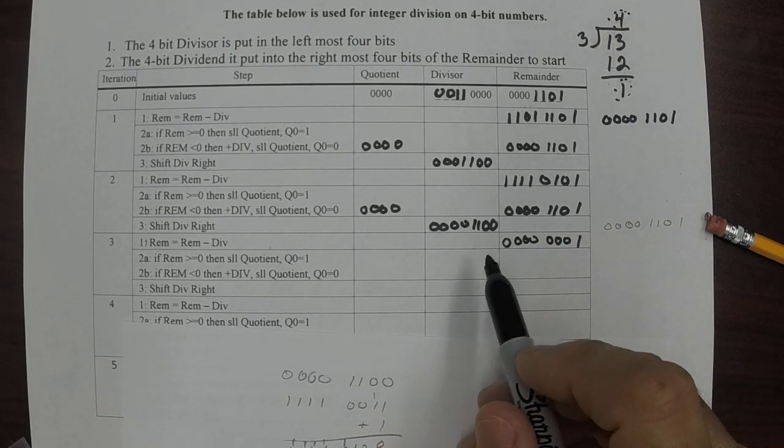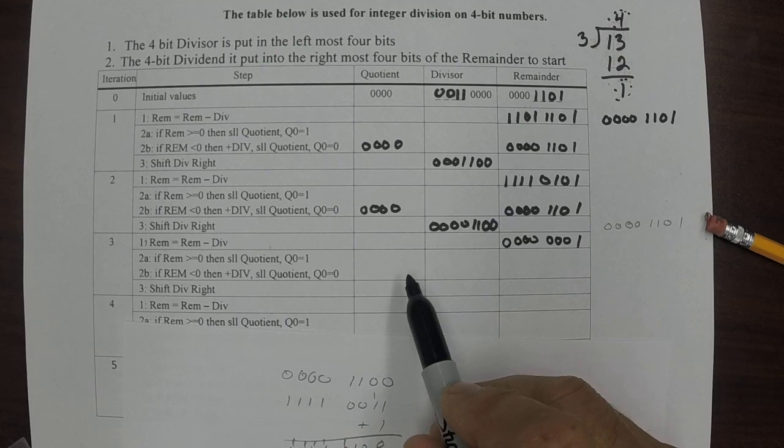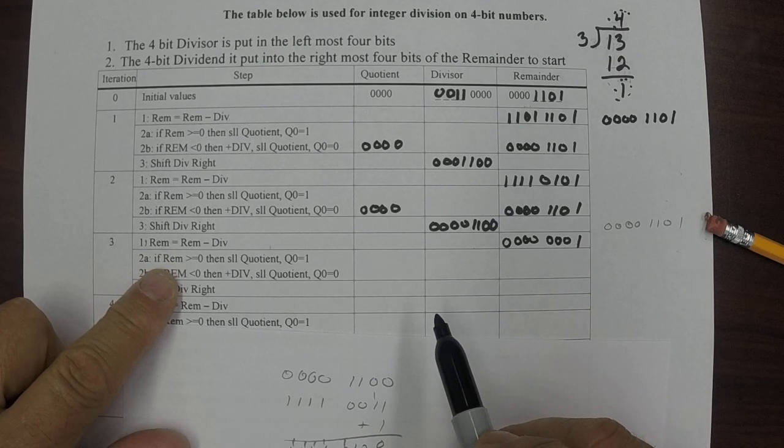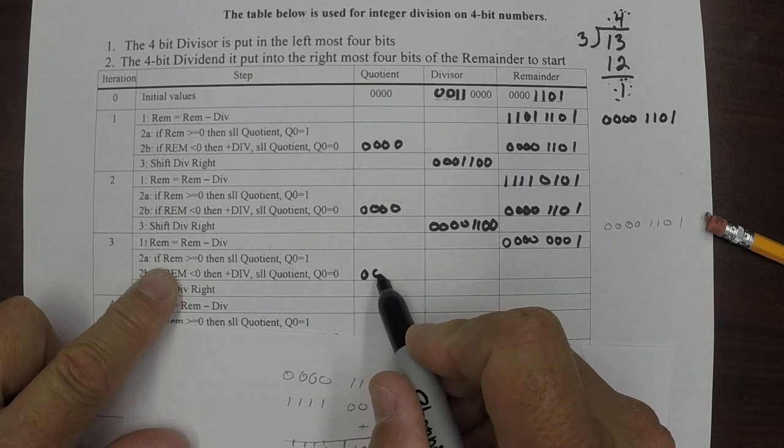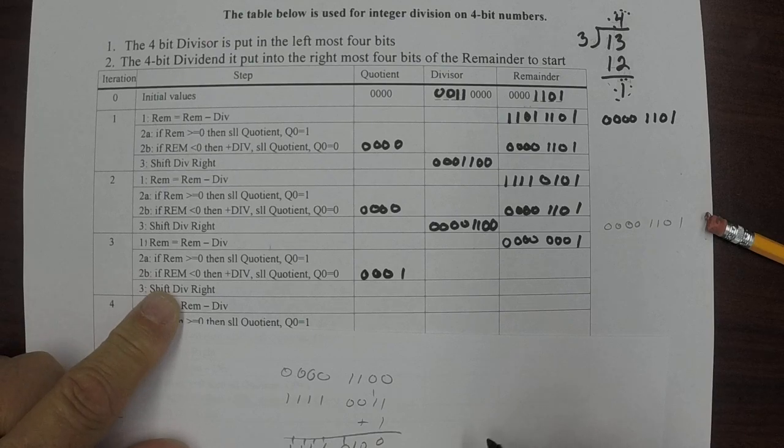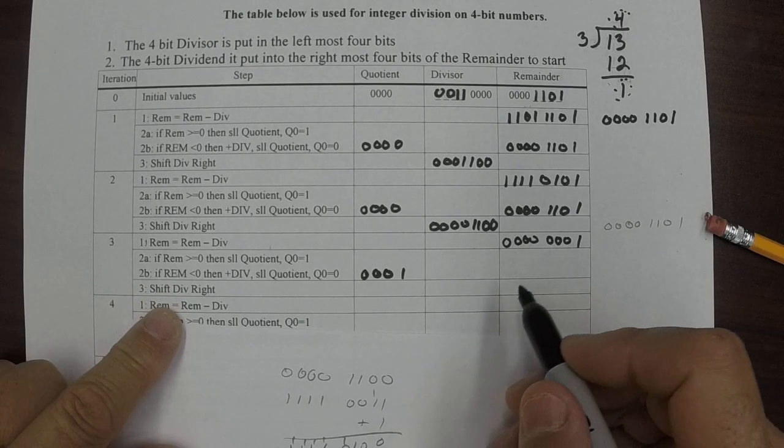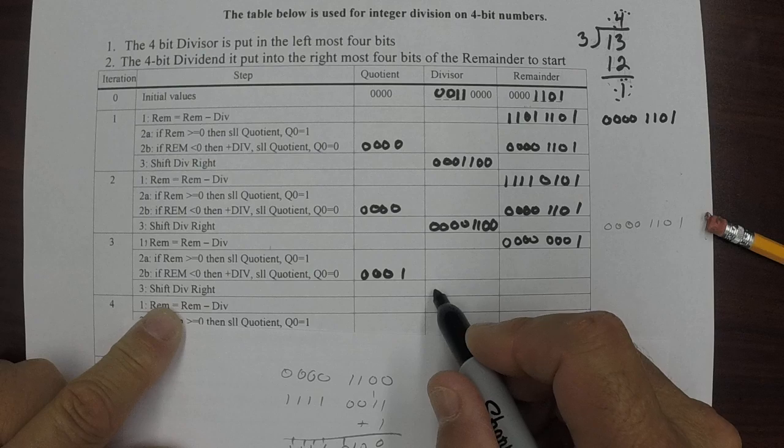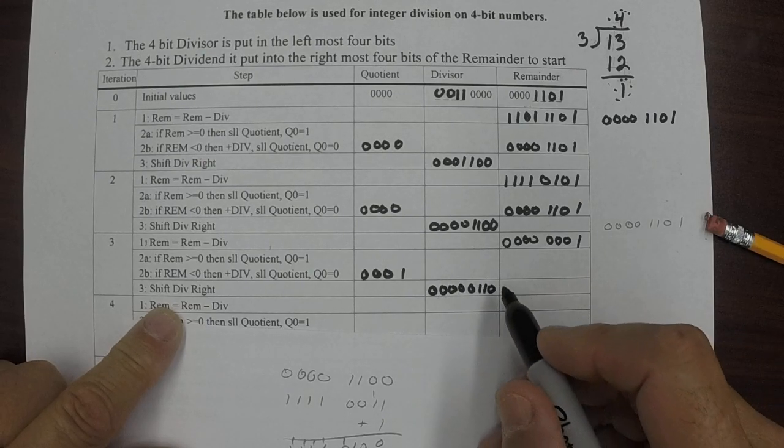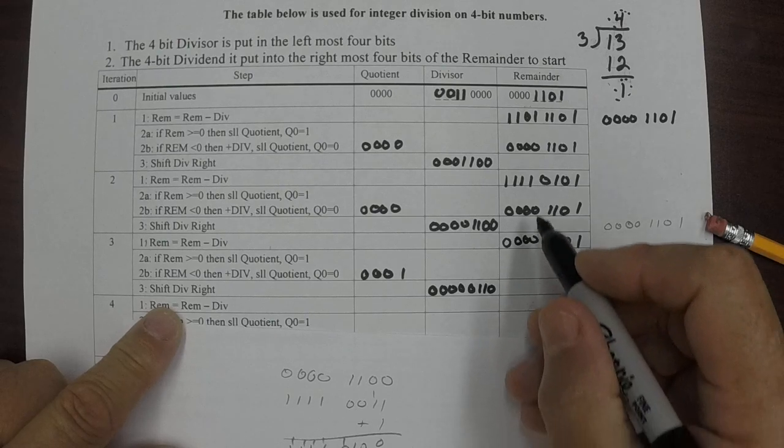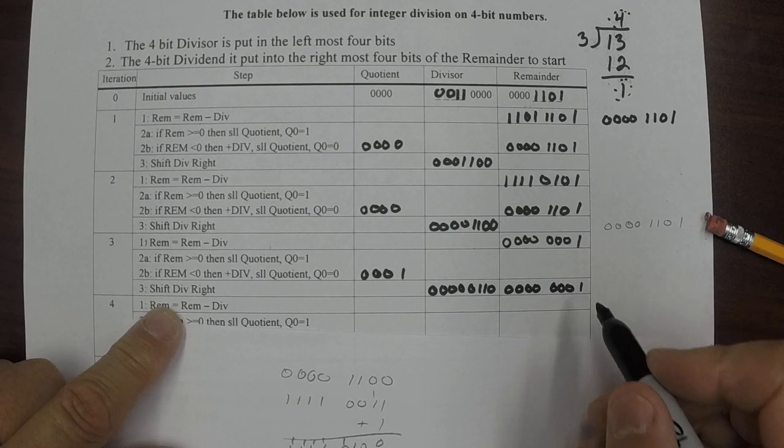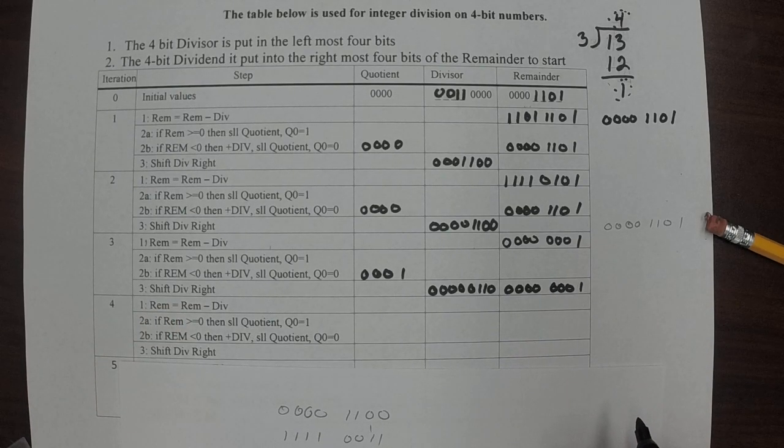Now, if the remainder is greater than or equal to zero, it is. Then I shift the quotient left and put a one right there. Then I shift the divisor right: zero, one, one, zero. And I leave the remainder alone. The remainder gets left exactly where it was, so I don't change it.